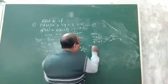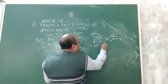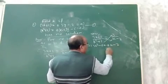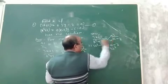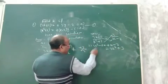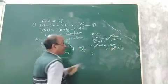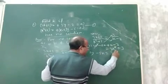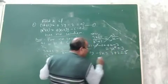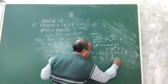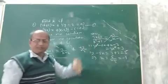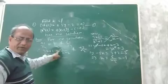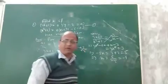By cross multiplication: 3k² − 6k + k − 2 = 3k² + 3. The 3k² terms cancel, leaving −6k + k = −5k. So −5k = 3 + 2 = 5. Therefore the value of k is 5/−5, which is −1. So when we equated a1/a2 = b1/b2, we got the value of k equal to −1.